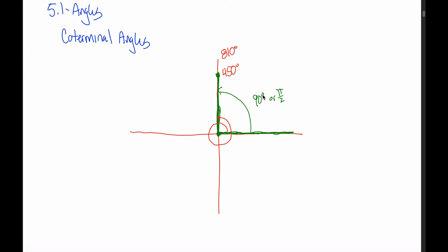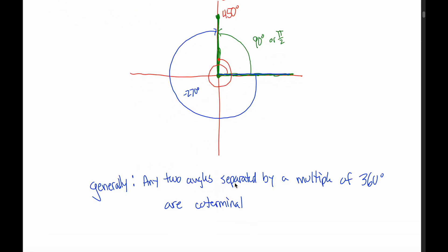In addition to talking about angles that are more than 360 degrees, I want to be able to talk about angles that are negative. What would that mean? All it means is we measure in the opposite direction. So a negative 270-degree angle — we still start on the positive x-axis, but since we normally measure counterclockwise, negative angles are measured in the clockwise direction. Measured negative 270 degrees, that takes me from my positive x-axis all the way up to my positive y-axis. So not only are 810 and 450 degrees coterminal with 90 degrees, but so is negative 270 degrees. More generally, any two angles separated by a multiple of 360 degrees are coterminal.